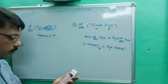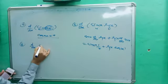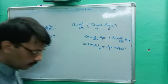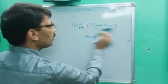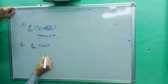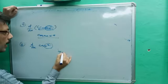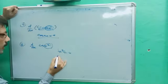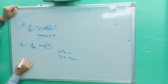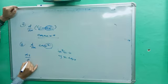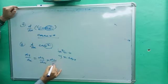Eighth question: d/dx of cos(x²). I will solve this by two methods. For the substitution method, let u = x², so y = cos u. The chain rule formula is dy/dx = dy/du · du/dx.